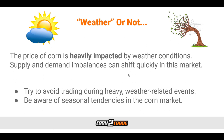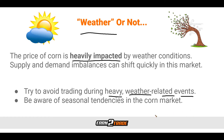Now that we understand the value of price change, it's important to understand what might be causing that price to change. The first thing on the chopping block is going to be the weather. The price of corn is heavily impacted by weather conditions, and supply and demand imbalances can shift quickly as a result. We want to try to avoid trading during heavy weather-related events. For example, if all the farmers in the Midwest are being battered with a large series of extremely powerful tornadoes, that could disrupt the supply chain of corn and lead to definite increases in price due to a shortage down the line.